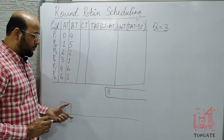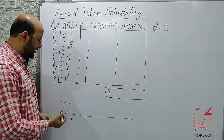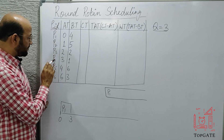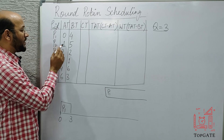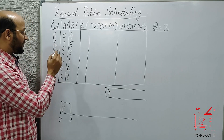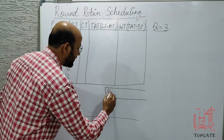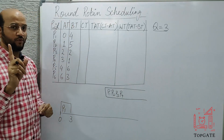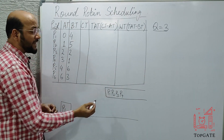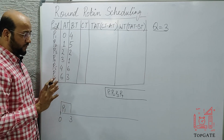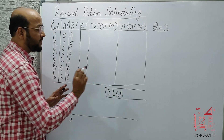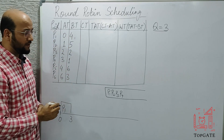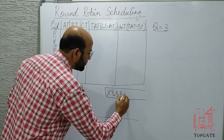Now we are at time three. At this point we will do two things. First step: I'll check if there are any processes arriving in the RAM up to time three. Yes, we have P2, P3, and P4 — P2 came at one, P3 came at two, P4 came at three. So we write all three processes: P2, P3, P4. Second step: I'll check whether P1 has completed its work. P1's burst time is 4, it has executed 3, so one unit is still left.